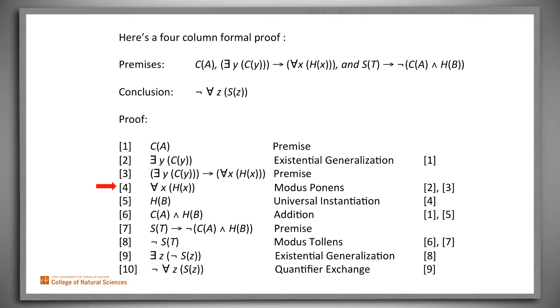From those two statements and modus ponens, it follows that everyone did his or her homework. Thus, from universal instantiation, in particular, Bob did his homework.